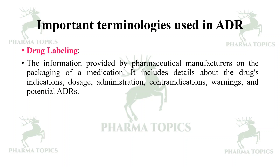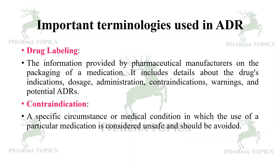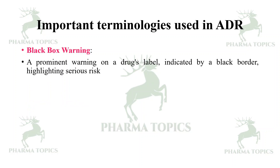A contraindication is a specific circumstance or medical condition in which the use of a particular medication is considered unsafe and should be avoided. A black box warning is a prominent warning on a drug's label indicated by a black border, highlighting a serious risk associated with the medication.